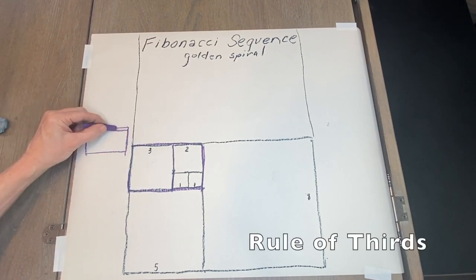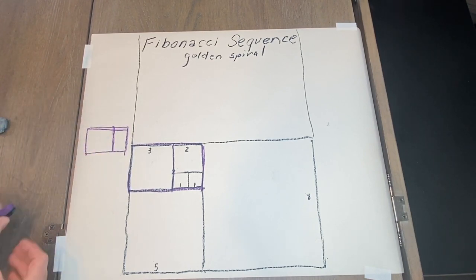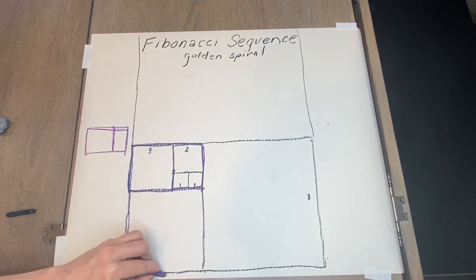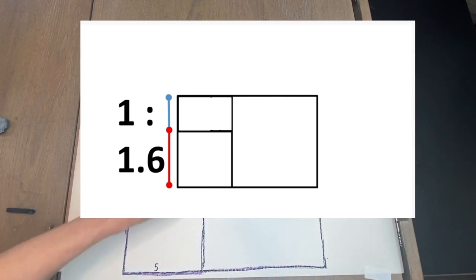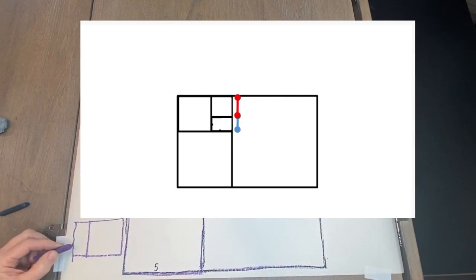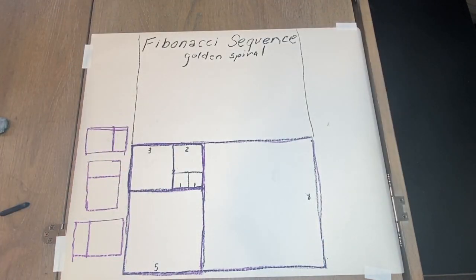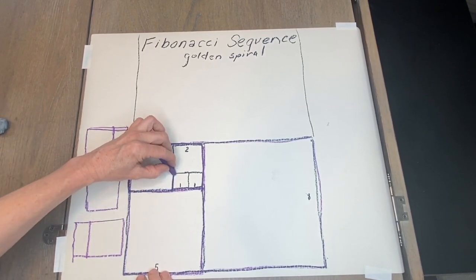Watch as I highlight certain areas or segments of this Fibonacci sequence example. You'll begin to notice that there is a pattern that continues throughout of the ratio of approximately one third to two thirds.